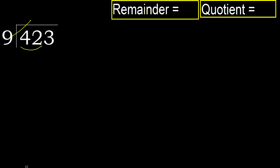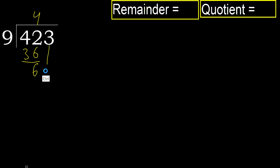9 multiplied by which number is nearest to 42 but not greater? 9 multiplied by 5 is 45, which is greater. Multiply by 4: 9 times 4 is 36, which is not greater. Subtract: 42 minus 36 equals 6. Next, bring down to get 63.